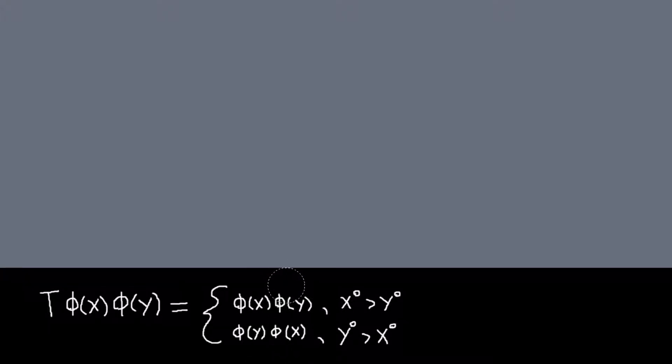So basically, the way I think of it is if an operator is earlier in time, then you'll operate with it first. So that's why phi(y) is on the right, and then phi(x) is on the left in this case, and vice versa here. That kind of makes sense to me.